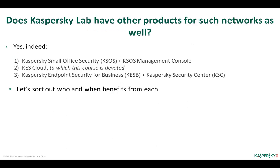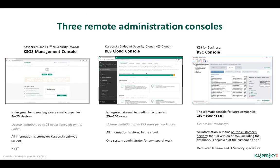Kaspersky Lab offers three products for small network protection: Kaspersky Small Office Security (KSOS) plus KSOS management console, Kaspersky Endpoint Security Cloud — which this course is devoted to — and Kaspersky Endpoint Security for Business (KSB) plus Kaspersky Security Center (KSC). Let's sort out who and when benefits from each. The whole Kaspersky Lab product line consists of three large groups: home products, products for small and midsize offices, and enterprise products.